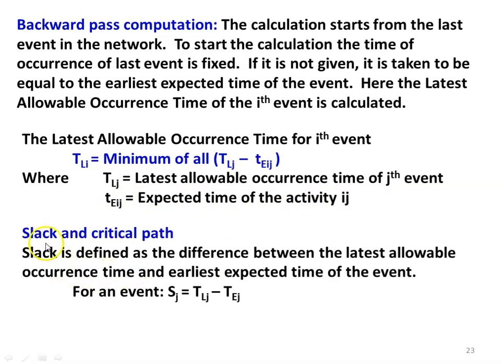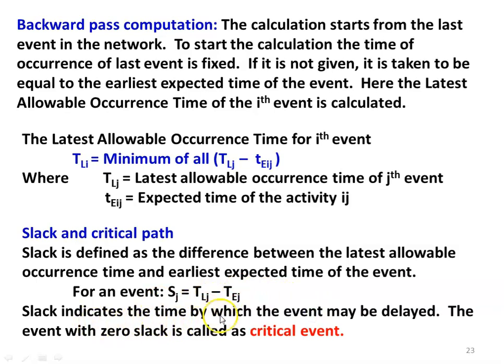After these two calculations, we calculate the slack and the critical path. The slack is defined as the difference between the latest allowable occurrence time and the earliest expected time of the event: S_j equals TL_j minus TE_j. The slack indicates the time by which the event can be delayed. If the slack equals 5, we can delay the activity by 5 days. If the slack equals 0, you cannot delay the event — you have to complete the event in the stipulated time. The event with zero slack is called a critical event.